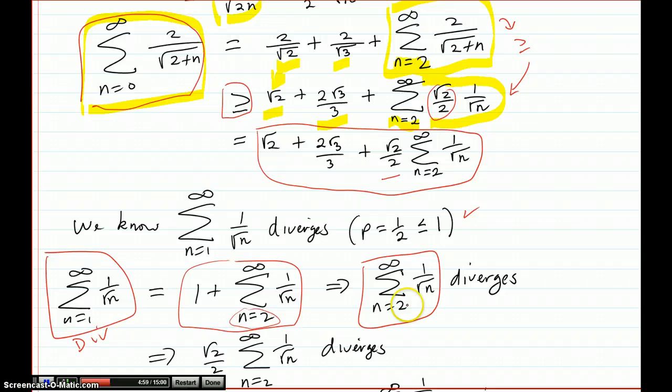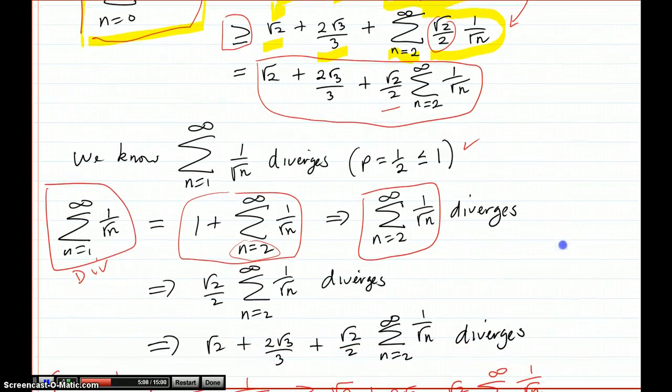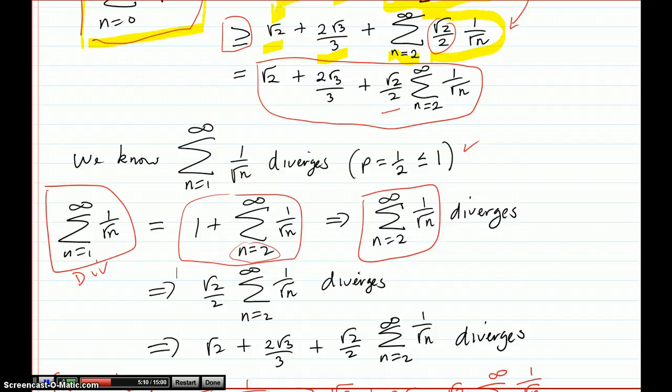Because if it converged, then when I added on the 1, that would converge and that would contradict that this series here diverges. And that implies that if I just multiply that divergent series by a constant, square root of 2 over 2, that will diverge also. Of course, I got the idea for the square root of 2 over 2 to put that there, because I know I'm going to have to match it up to this later.